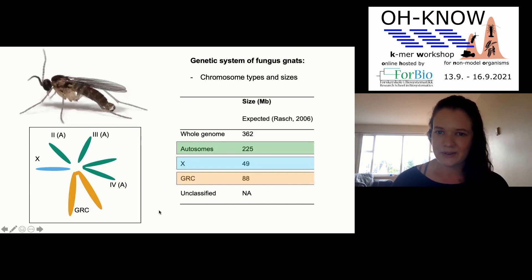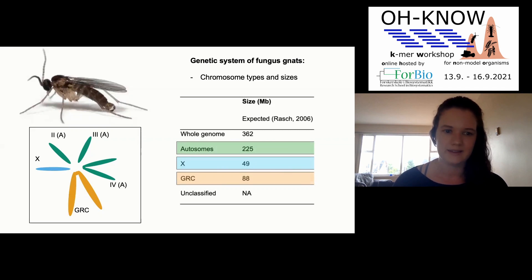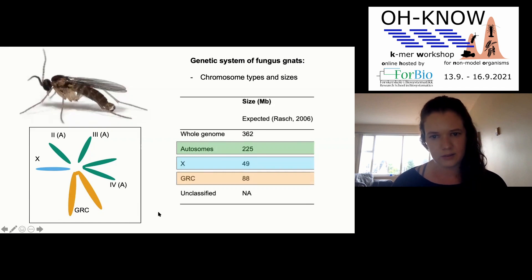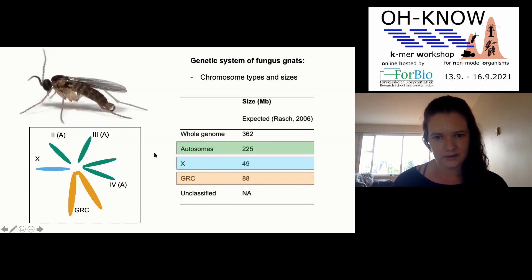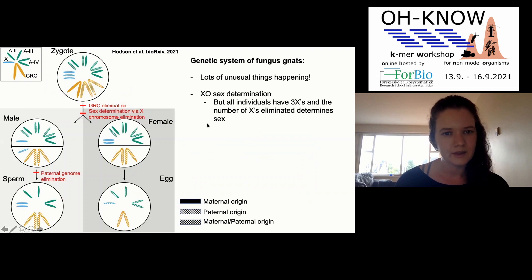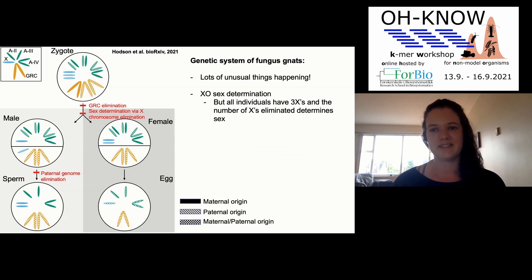I'll give an overview of the types of chromosomes and their expected sizes. There are three autosomes in this species, an X chromosome shown in blue, and the germline-restricted chromosomes shown in orange. The genome of the species is expected to be around 360 megabases, and I've shown the relative sizes of each chromosome type. The expected sizes are based on flow cytometry estimates.